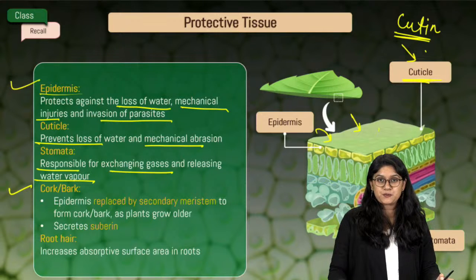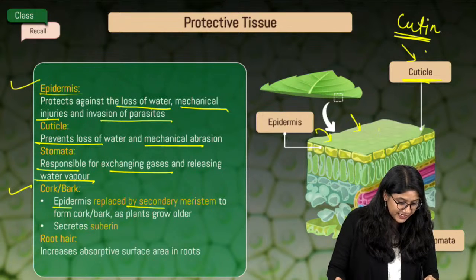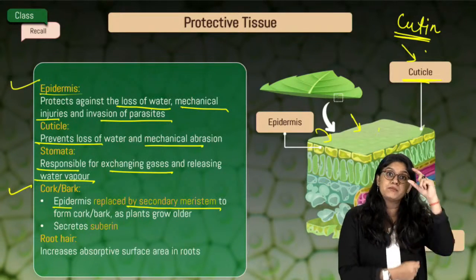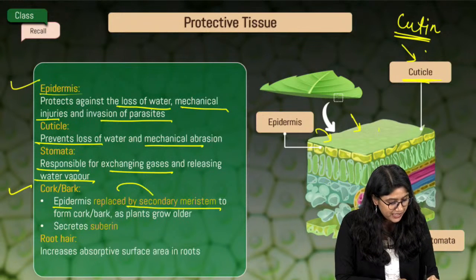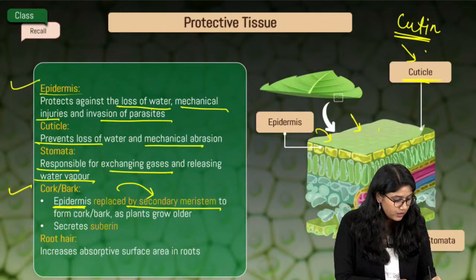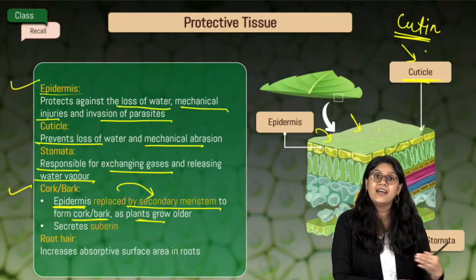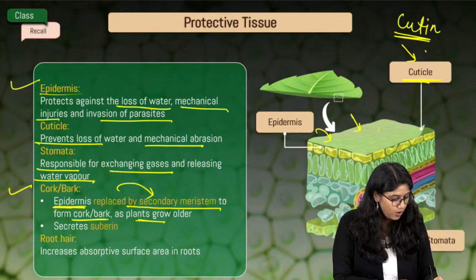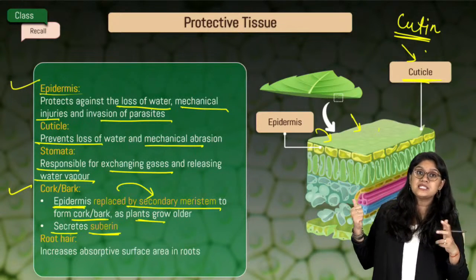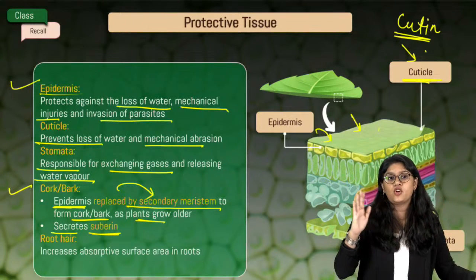In protective tissue we also have the bark or the cork cells. The epidermis is replaced by the secondary meristem. As the plant grows, the epidermis will be replaced by the secondary meristem and we will have the cork or the bark. Cork cells are dead cells with a secretion of a chemical substance called suberin, which acts like a cement making it impossible for the exchange of materials.